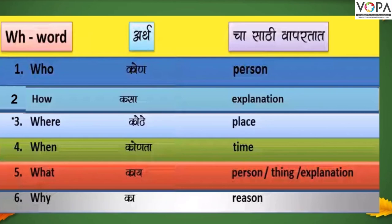WHO means 'kon' and is used to ask about a person. HOW means 'kasa', used to ask for an explanation. WHERE means 'kothe', used to ask about a place. WHEN means 'kontha time', used to ask about time. WHAT means 'kai', used to ask about a person, thing, or explanation. WHY means 'ka', used to ask for a reason or cause.